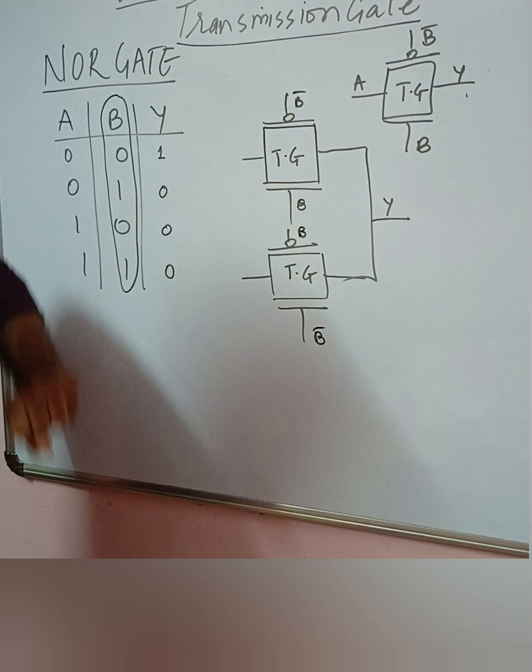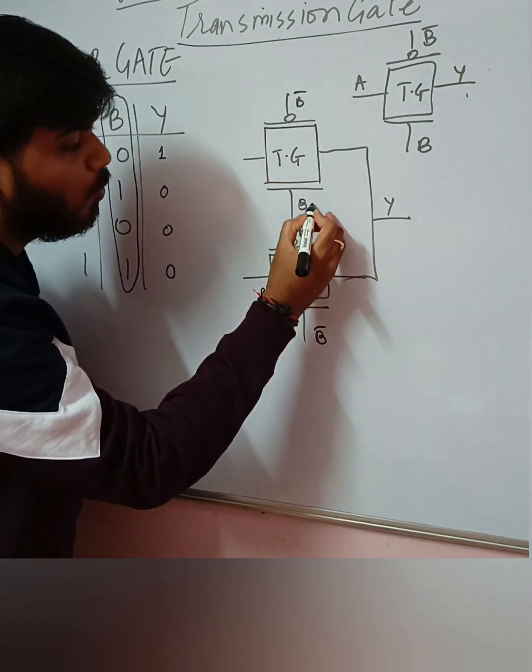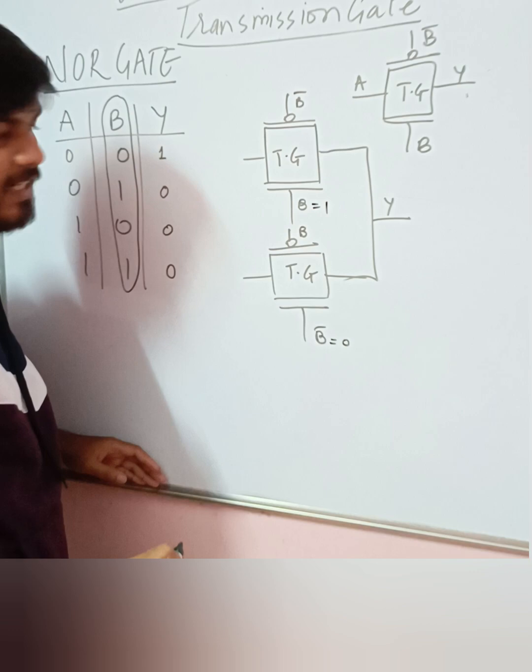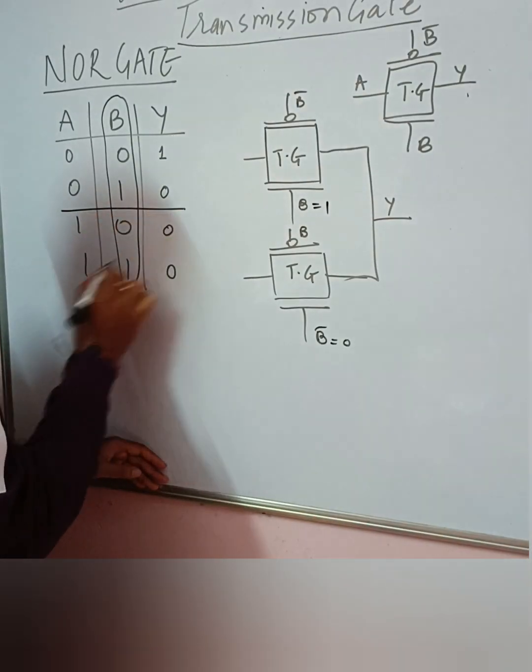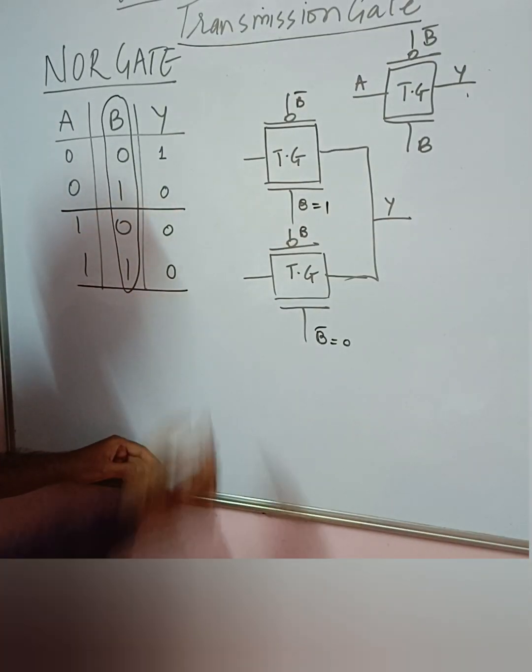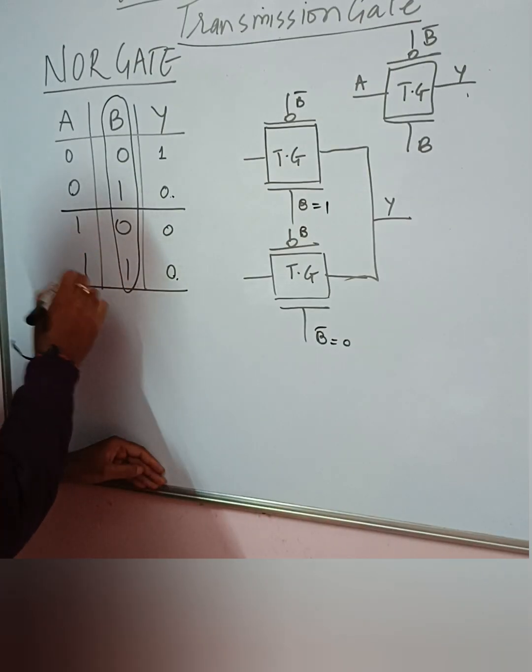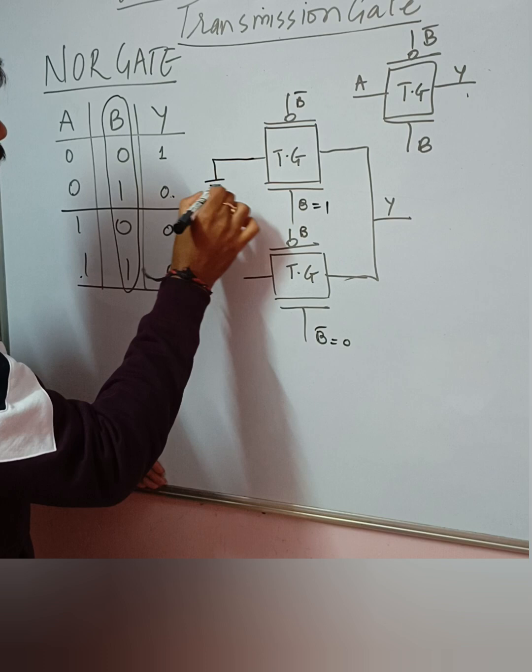Now, this transmission gate will be activated only when B is equal to 1. When B is equal to 1, and when B is equal to 0, this transmission gate will be activated. Now when B is equal to 1, how many combinations are there? One and two, there are two combinations. What is happening to the output? Output is always going to 0 irrespective of A. So this will be directly connected to ground.